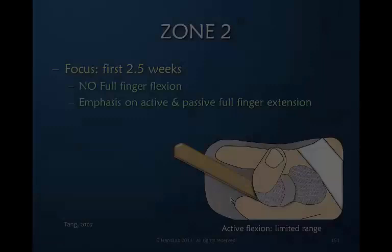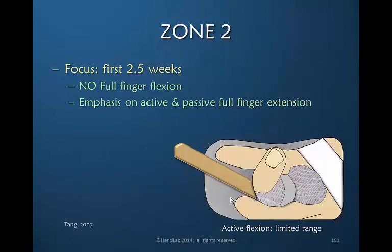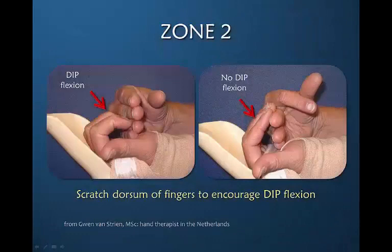Going from that position into further flexion gives you proximal glide. Tang often uses a tongue depressor to place the MP joint in greater flexion than the orthosis, to facilitate an emphasis on active and passive full finger extension.